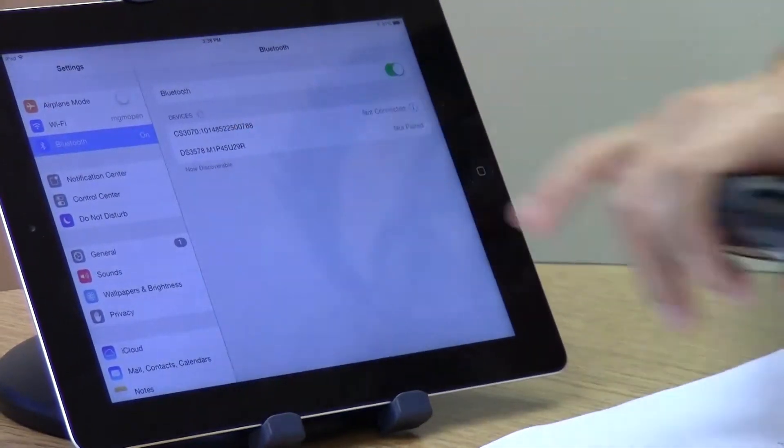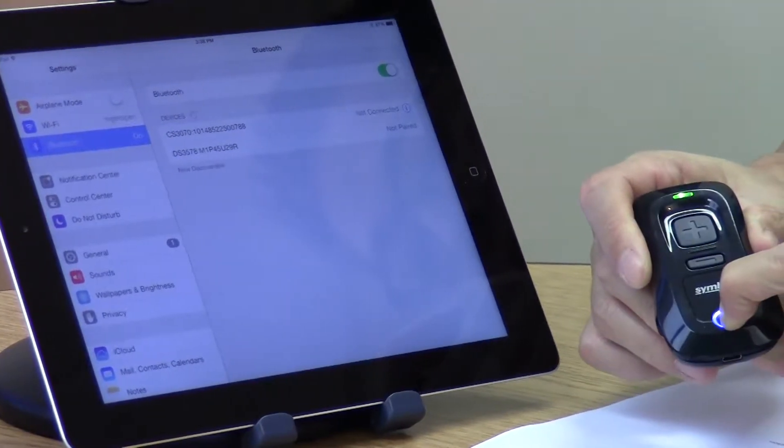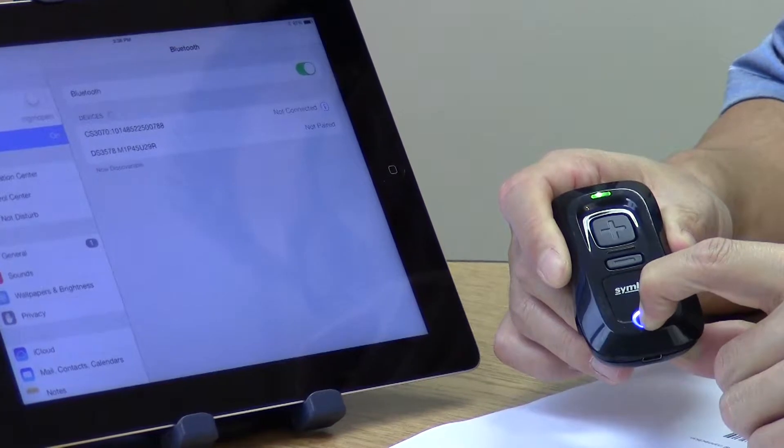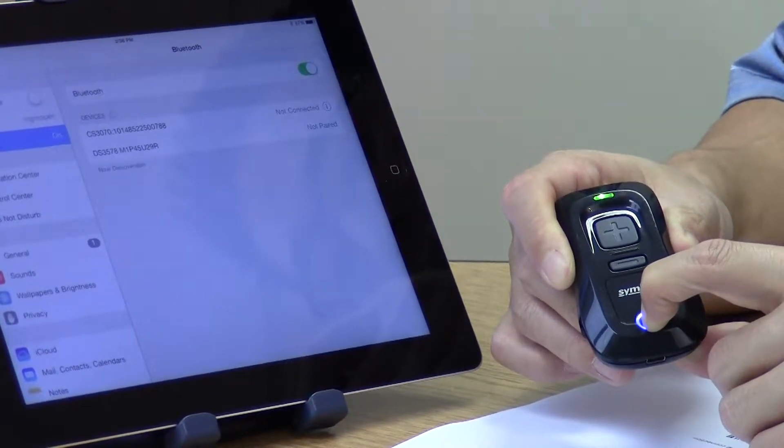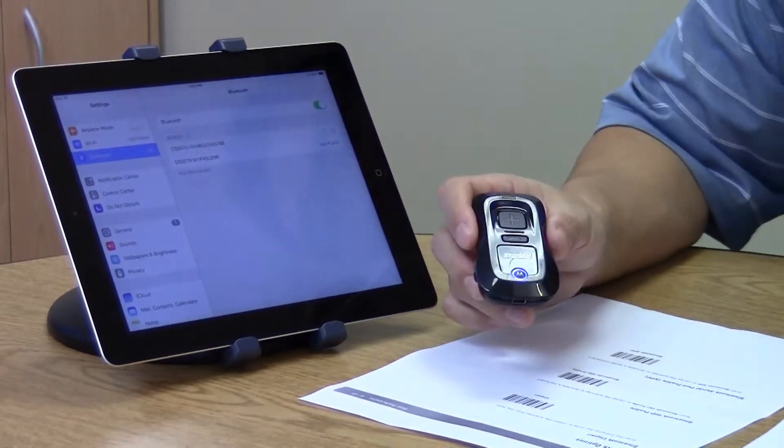You'll see the 3070 available there. You hold down the double bat wings to put it into pairing mode, and then you click connect.